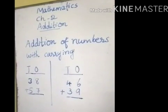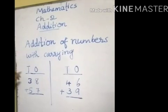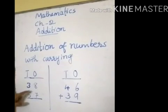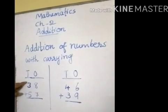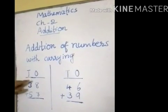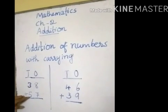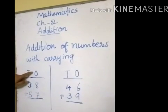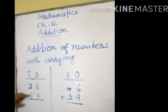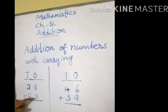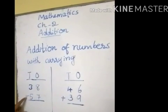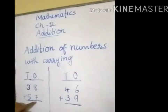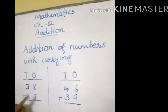Addition of numbers with carrying. Let us solve these examples. 38 plus 57. 38, 3 tens and 8 ones. 57, 5 tens and 7 ones. Let us add ones first. 8 plus 7 is equal to 15. 15 is 1 tens and 5 ones.